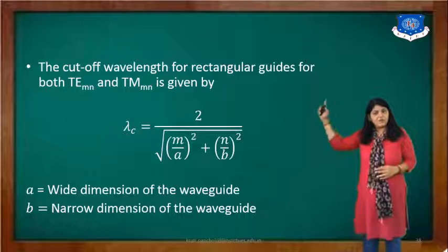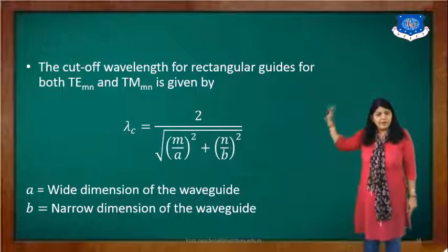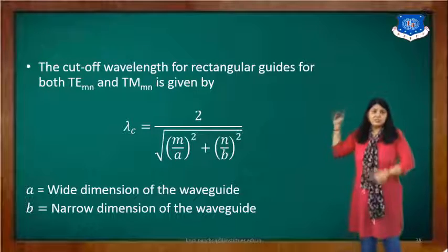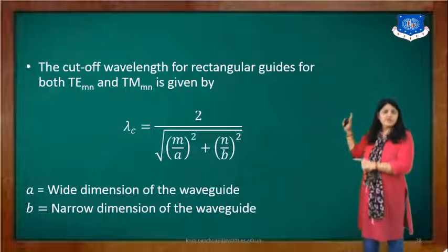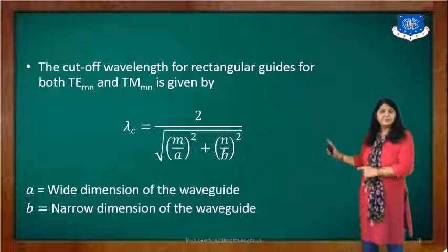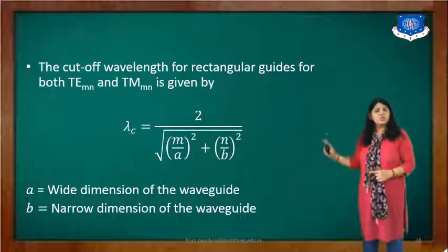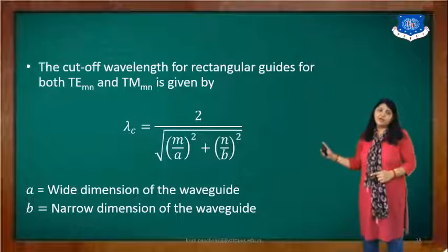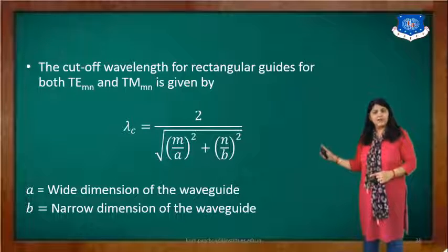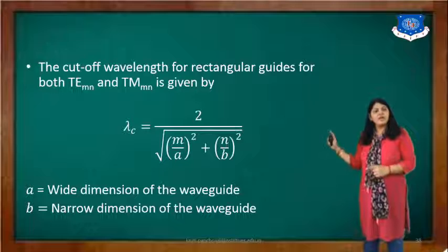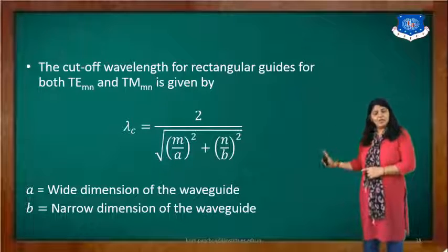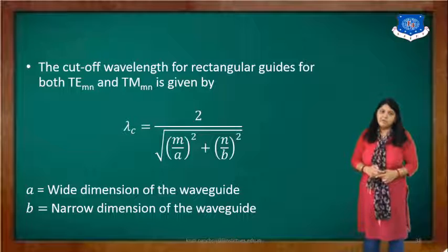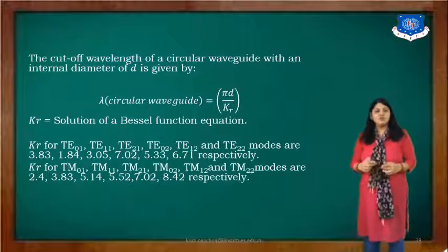The cutoff wavelength for a rectangular waveguide, for both the TE and TM modes, is given by the equation: lambda c equals 2 divided by the square root of (m/a)² plus (n/b)², where a is the wide dimension of the waveguide and b is the narrow dimension of the waveguide.